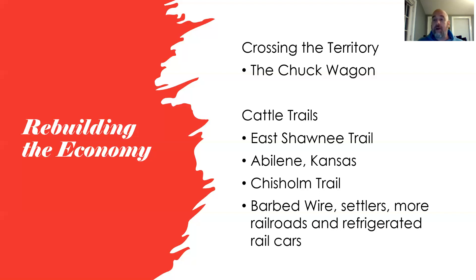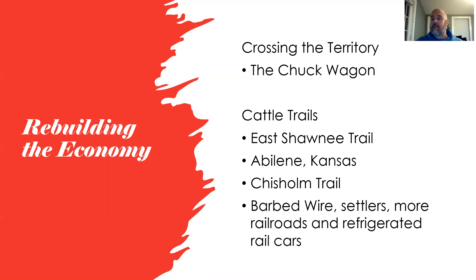Eventually cattle drives died out. Barbed wire was one major factor — a cheap way to fence land that made it harder to drive cattle through territory, as drivers kept running into fences. More settlers meant more settlements to pass through, and grazing on others' land became a significant issue. Refrigerator rail cars also meant meat could be butchered and kept fresh without driving live cattle to market.